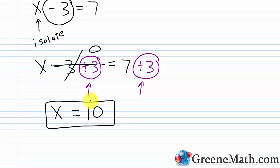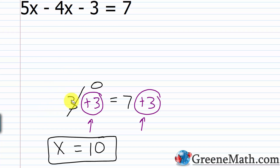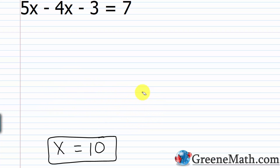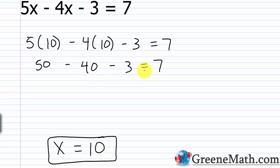Let's plug 10 in for x and check — using the original equation, not the simplified version, because you might have made a mistake simplifying. So: 5 times 10 minus 4 times 10 minus 3 equals 7. That's 50 minus 40 minus 3 equals 7. Going left to right: 50 minus 40 is 10, and 10 minus 3 is 7. So 7 equals 7. x equals 10 is correct.